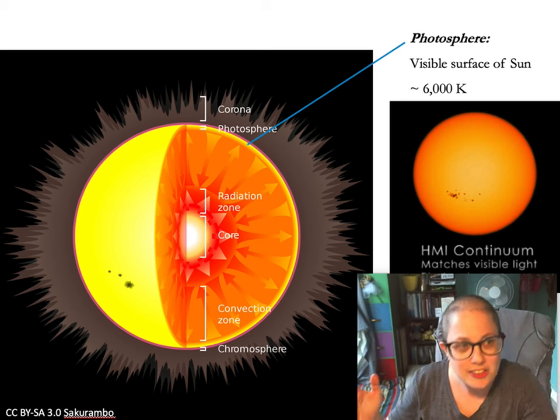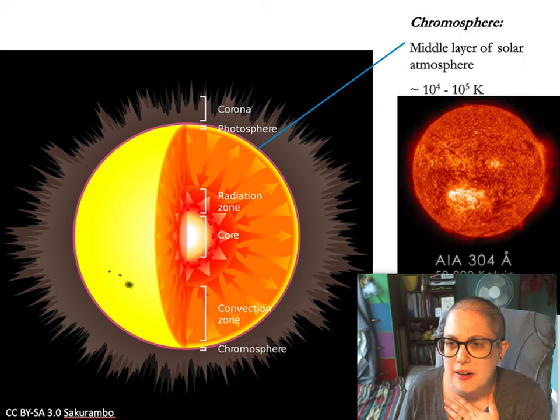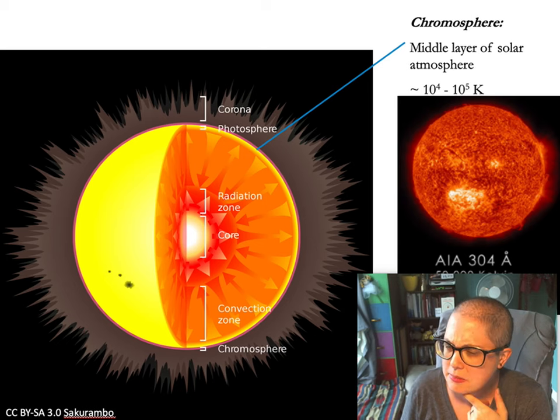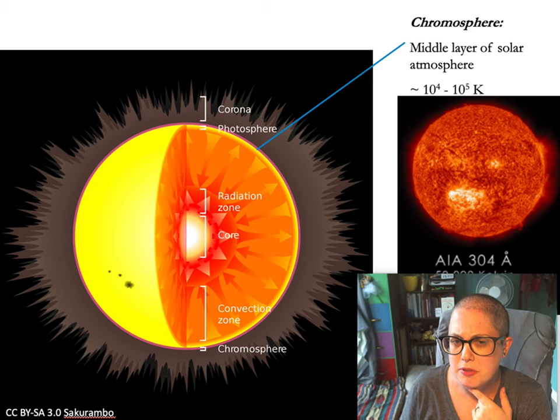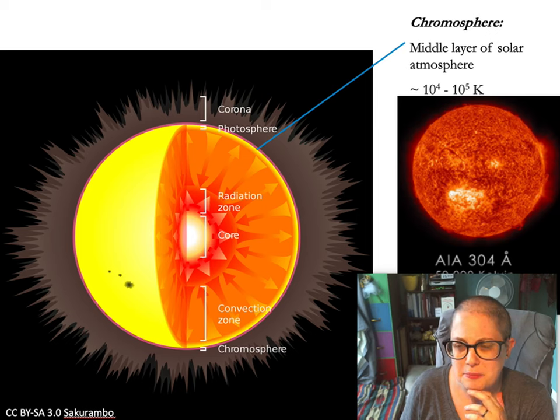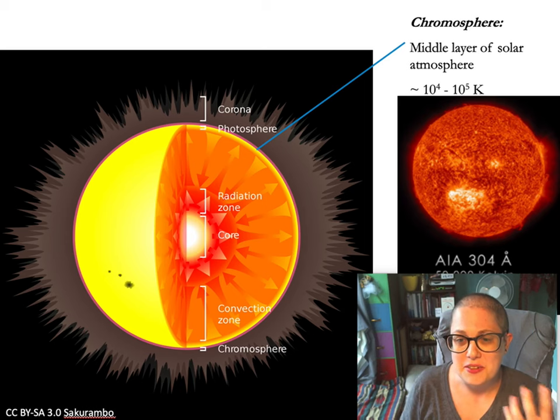There's a layer just above that called the chromosphere. So that is what's shown here in ultraviolet, I believe. Should be right, yeah. And so that is a layer that is actually a bit hotter. It's called the middle layer of the solar atmosphere. So you see when you look at the sun with this type of light there's a lot more activity that you can see. You can see more of the physics that's happening where those sun spots, where you now have a bright region.